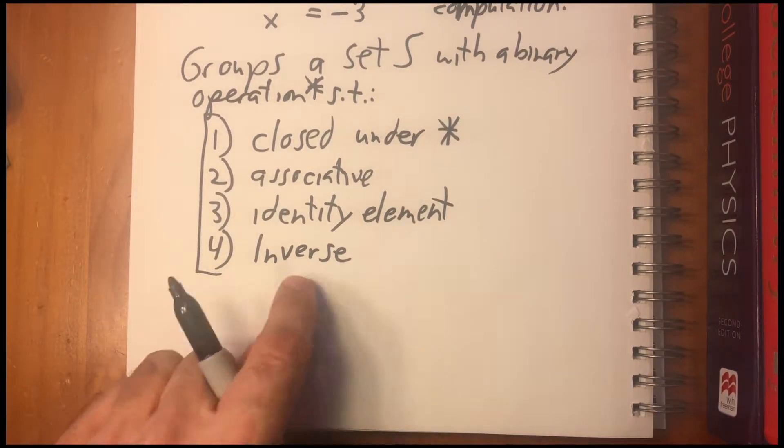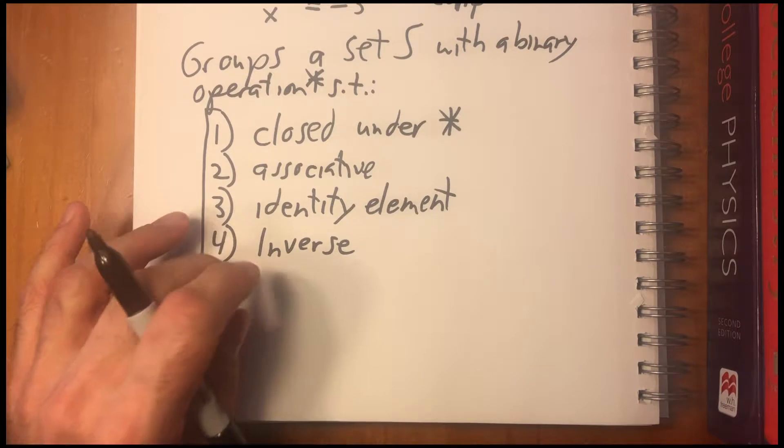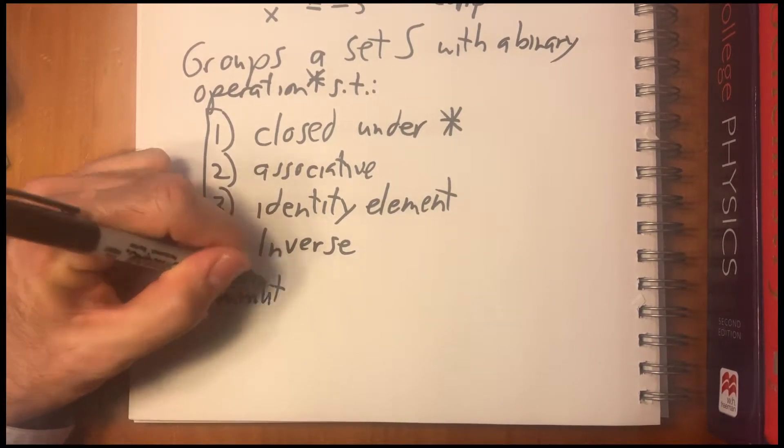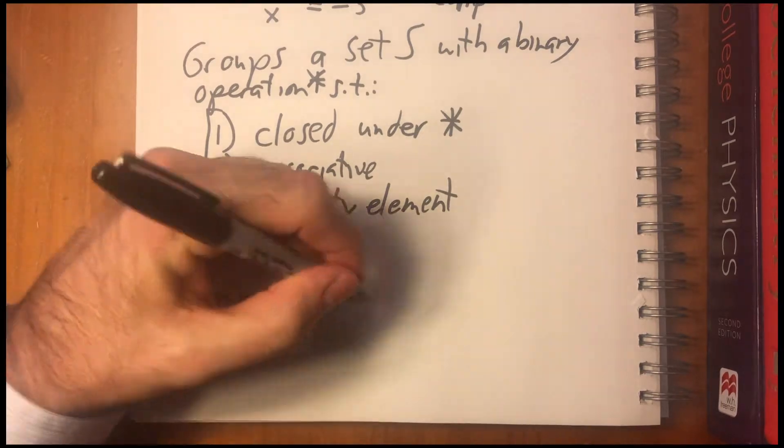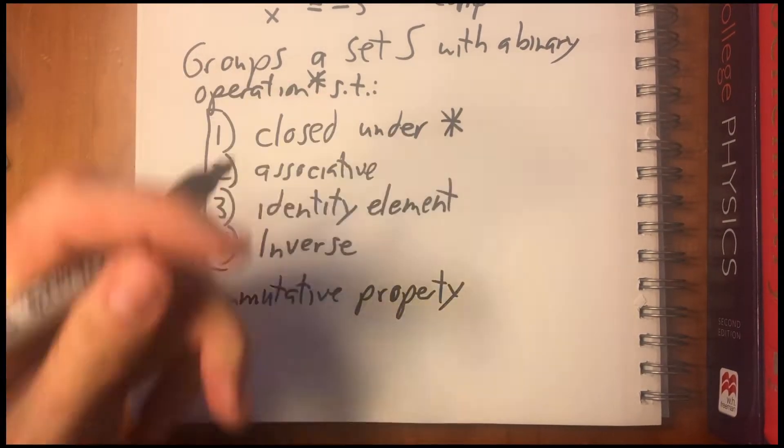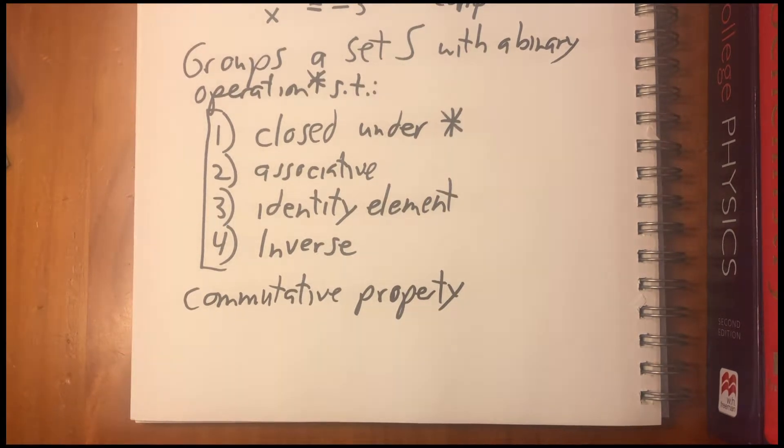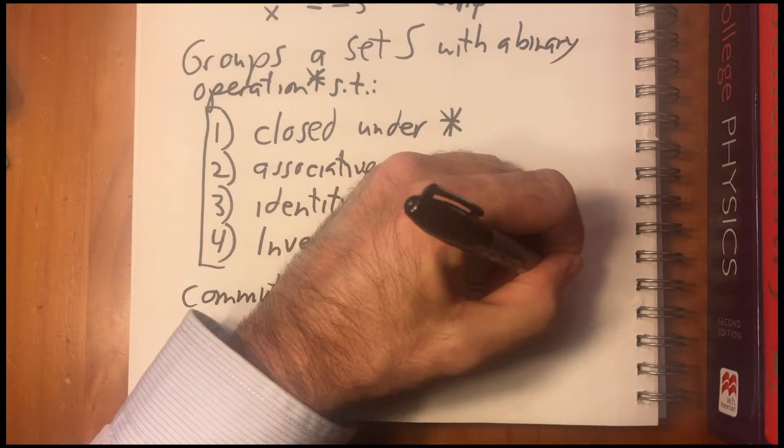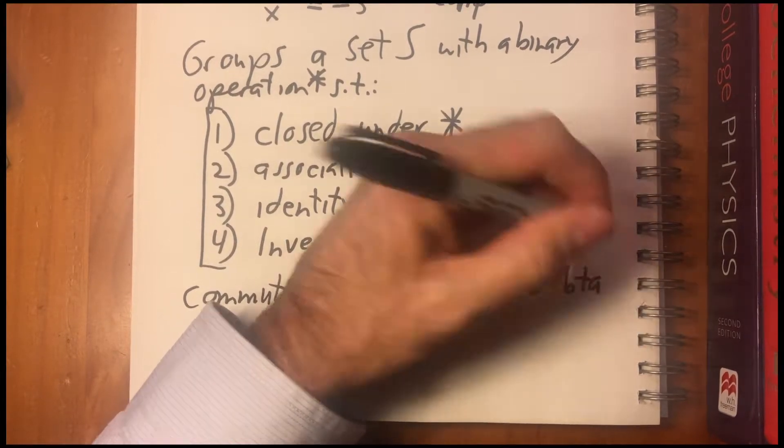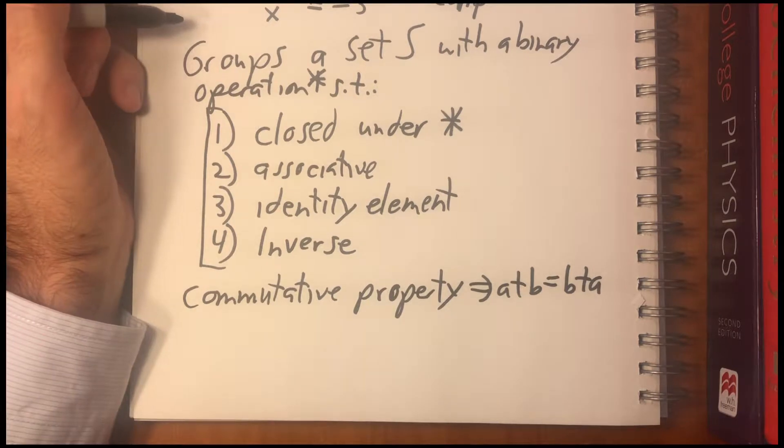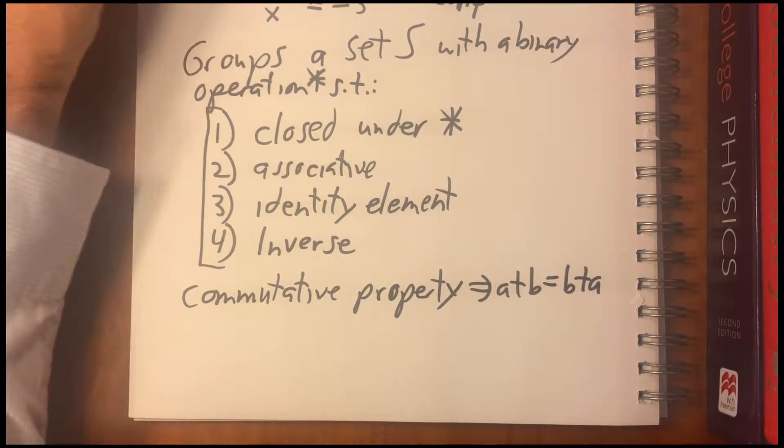Now, you'll notice there's one thing that we all learned in grade school that's missing here, which is the commutative property. So there are sets that have the commutative property, meaning A plus B equals B plus A. But as you can see here, we didn't need the commutative property to do, to solve this equation.